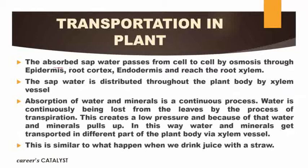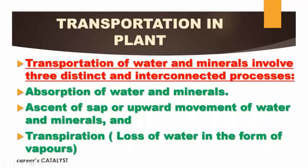The absorbed sap water passes from cell to cell by osmosis. Through this process it reaches the epidermis, then root cortex, then endodermis, and finally reaches the root xylem.